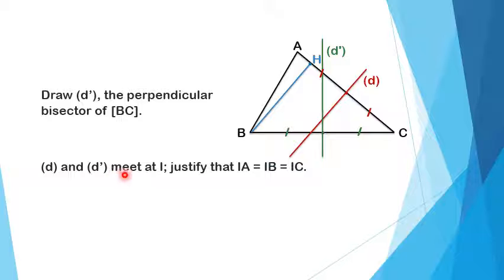D and D prime meet or intersect at point I. This is line D and this is line D prime. They intersect at this point here, so it's where I should plot point I. I have to justify that IA equals IB equals IC.